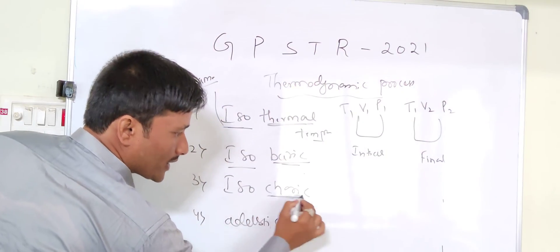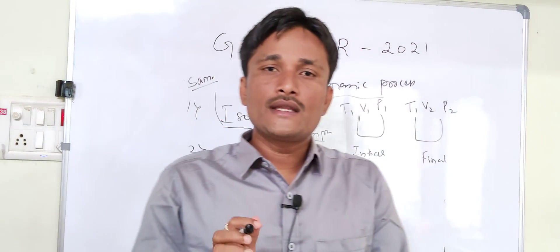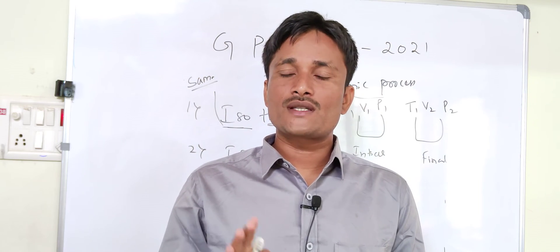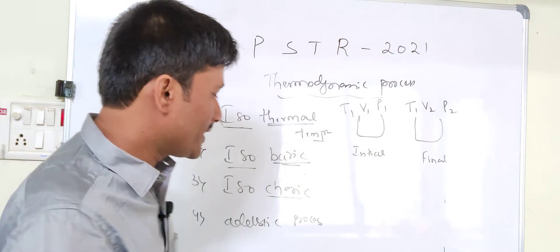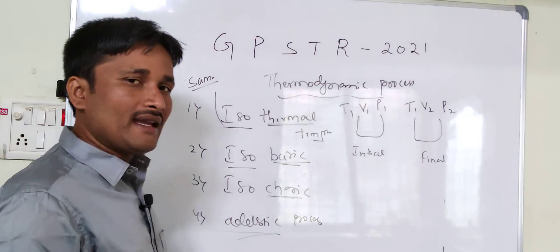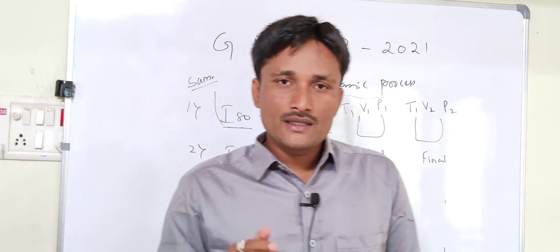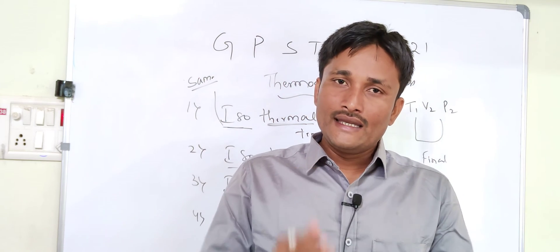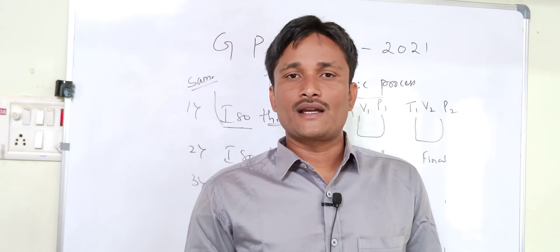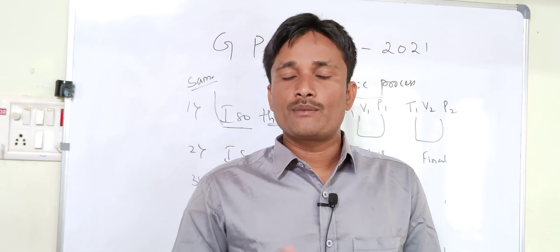Next is isochoric — 'coric' relates to volume — so isochoric is the process where volume remains constant. The next one is the adiabatic process: in an adiabatic process, neither heat moves outside nor comes inside the system — that process is called the adiabatic process.